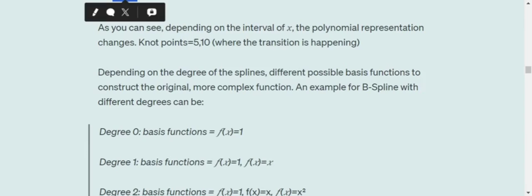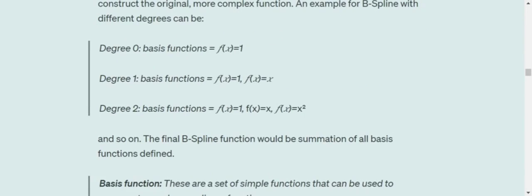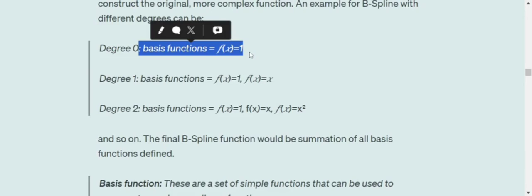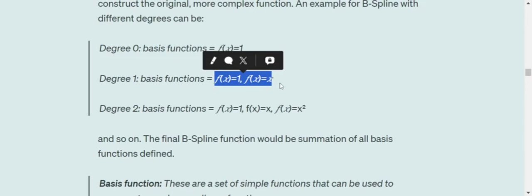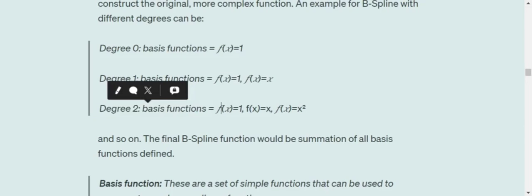Now, depending upon the degrees of spline, different possible basis functions are used to construct the actual function. So for example, a B-spline of degree 0 would look something like this: f(x) equals to 1, where the degree of the variable x is 0. Hence, it would be a constant function. Degree 1 would look something like this: f(x) equals to x. So it would be a combination of two functions. Remember that.